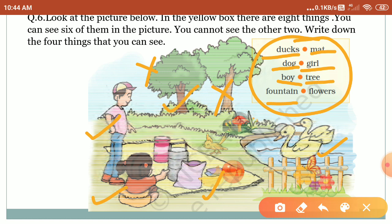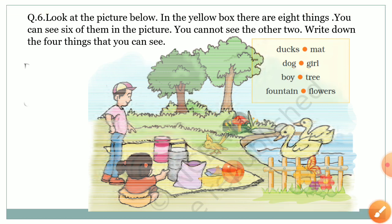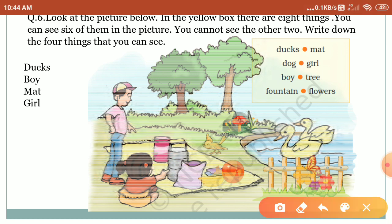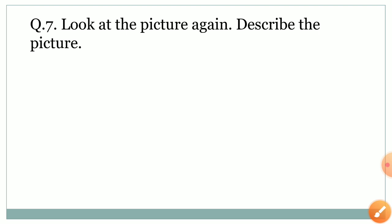Can you see a tree in this picture? Yes. Can you see flowers in this picture? Yes. So two things we cannot see in this picture: that is fountain and dog. Students, you have to write these four words: ducks, boy, mat, and girl. Now look at the picture again and describe the picture.